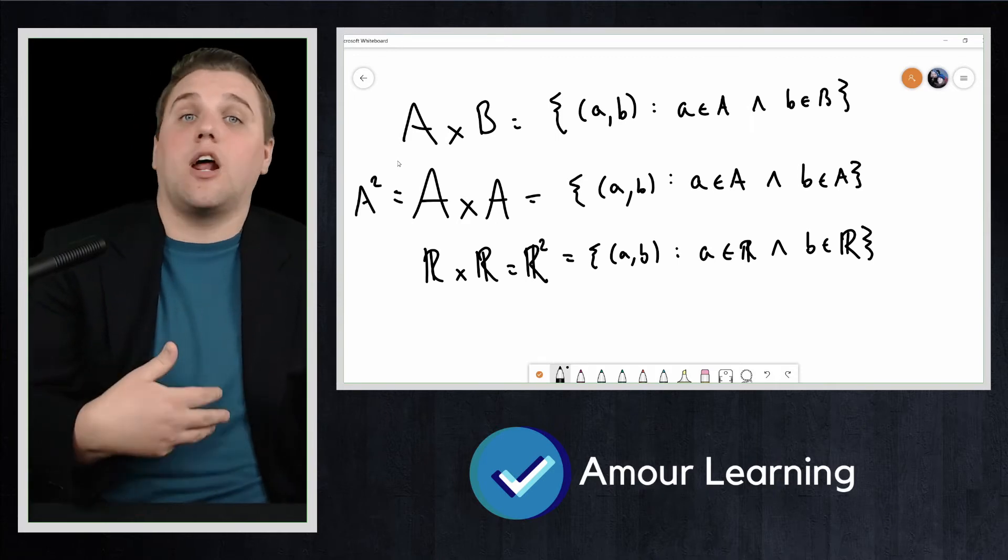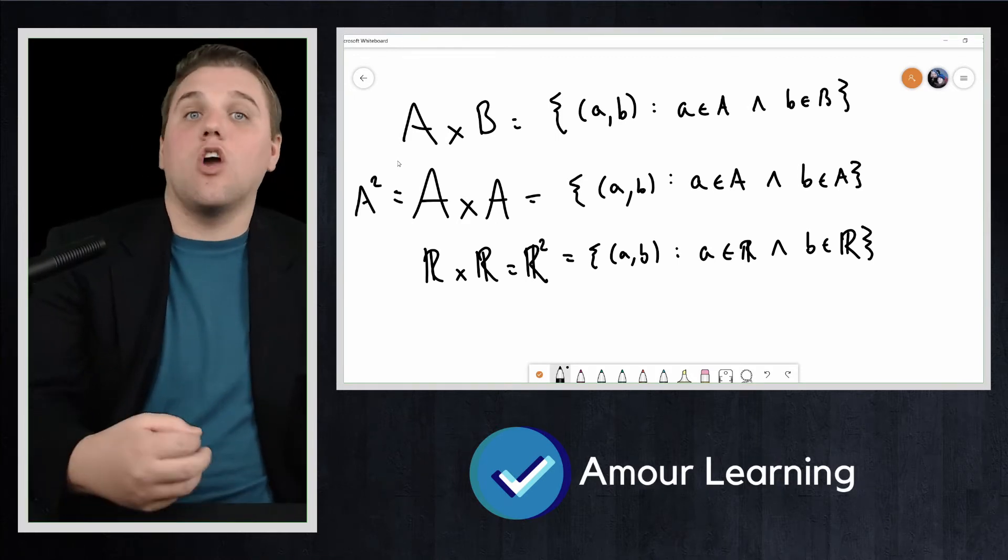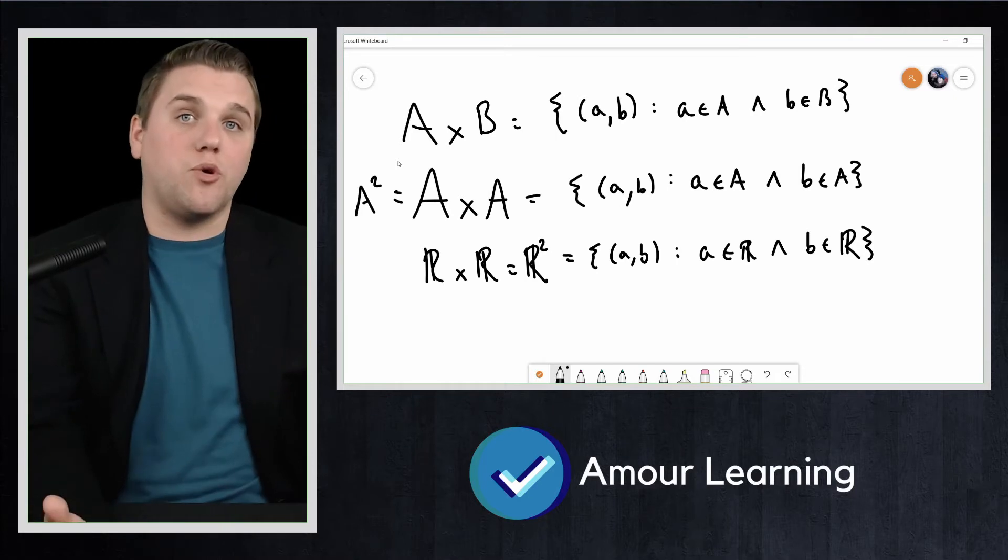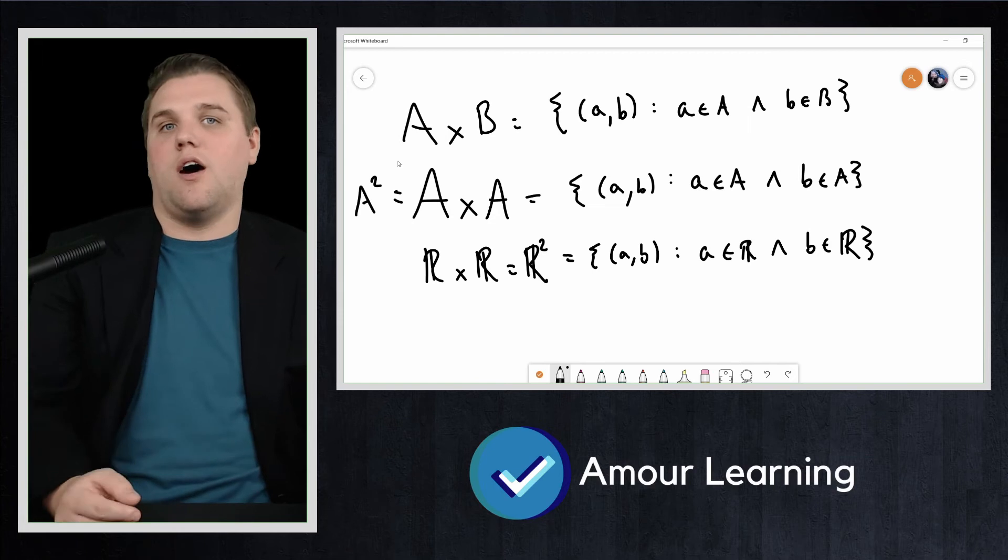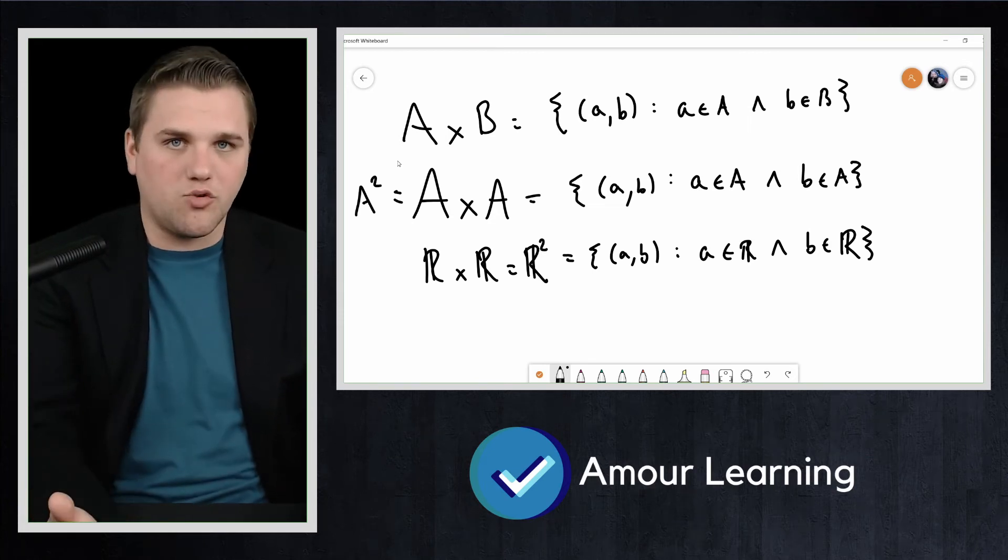We can also take product of three or more sets, getting ordered triples or quadruples and so on. You're probably familiar with R³, which is three space, or if you've taken calculus three...